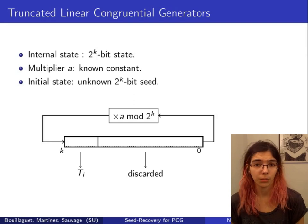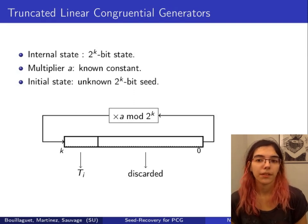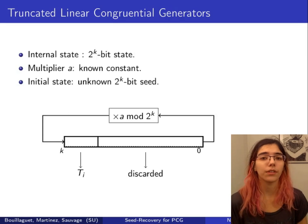This is easy because the multiplier and the modulus are known, and there is no increment. It's a well-known problem, and it will make us use Euclidean lattices.